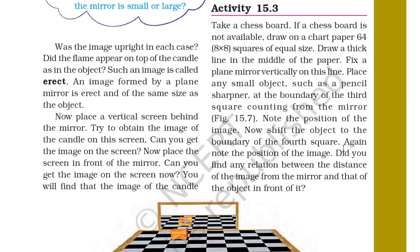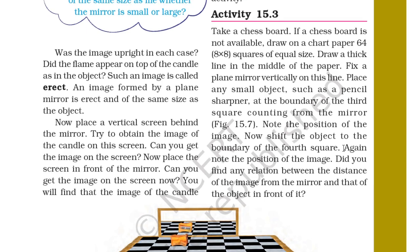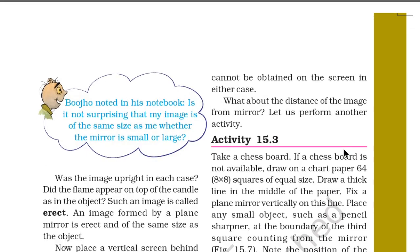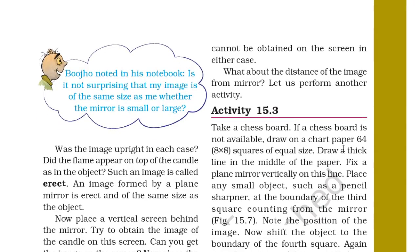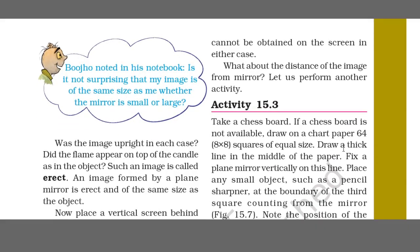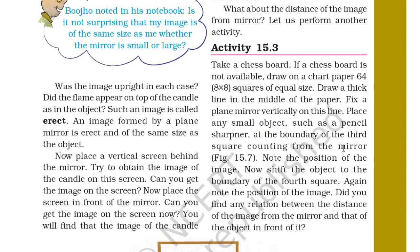An image formed by a plain mirror is erect and of the same size as the object. Now place a vertical screen behind the mirror and try to obtain the image of the candle on it. Can you get the image? Now place the screen in front of the mirror — can you get the image there? You will find that the image of the candle cannot be obtained on a screen in either case. What about the distance of the image from the mirror?